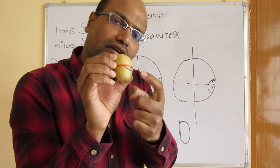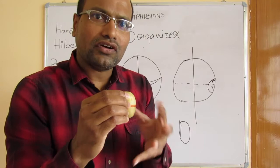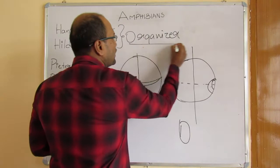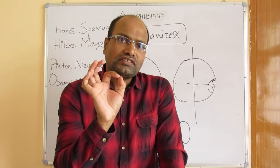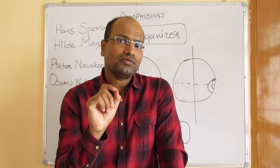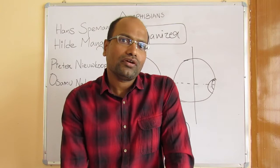The part containing the gray crescent developed into a complete newt, while the part without the gray crescent did not. This concluded that the gray crescent is important for organism development and is inducing the factors required for the developmental process — so it was called an organizer. Later scientists identified that the dorsal blastopore lip and the cells associated with it are the organizer structures important for initial development.